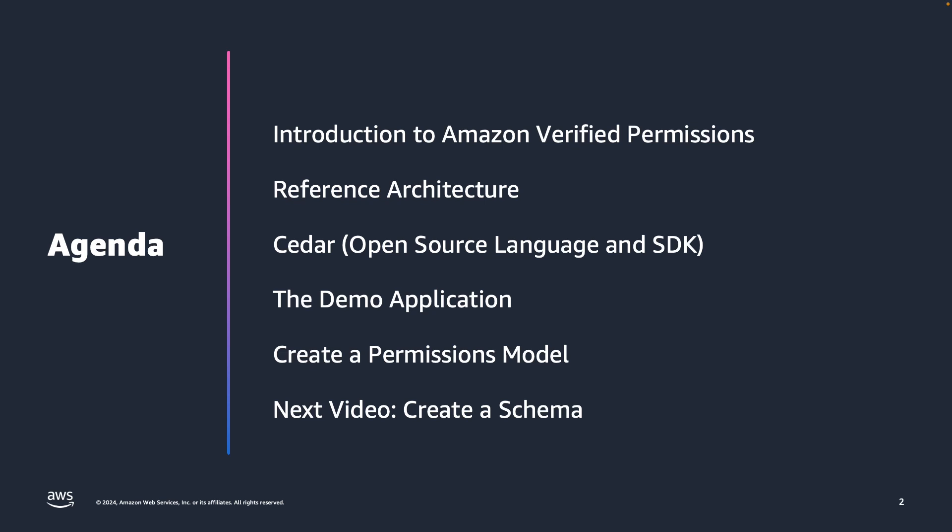First, we will give you an introduction to Amazon Verified Permissions. We will take a look at an end-to-end architecture flow, discuss Cedar language — an open-source language used to write permissions in Amazon Verified Permissions. We will then spend some time introducing a sample application and we will start to create a permissions model for that application. Finally, we will summarize what we have learned and provide a link to the next video in the series, where we will take this permissions model and create a schema.